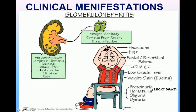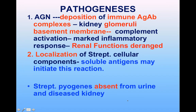The patient presents with marked edema — especially facial periorbital edema — raised blood pressure, headache, weight gain due to water retention, and smoky urine due to the presence of blood and protein. The patient also complains of oliguria and dysuria.